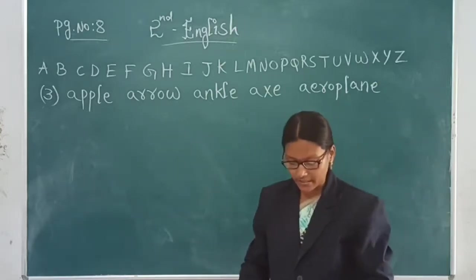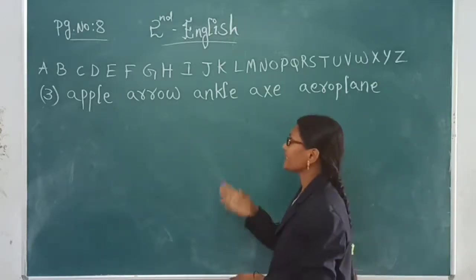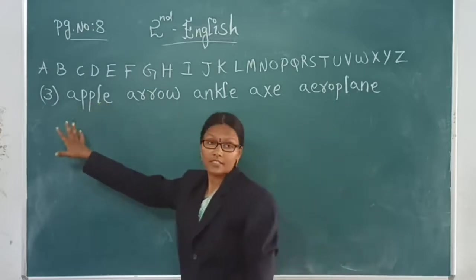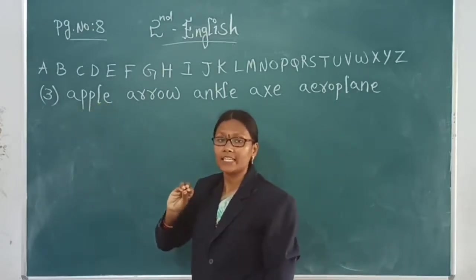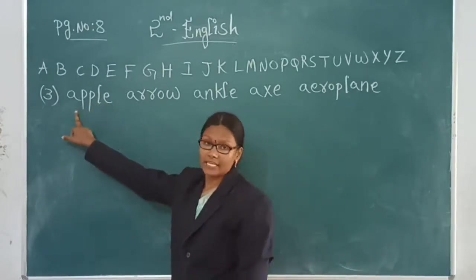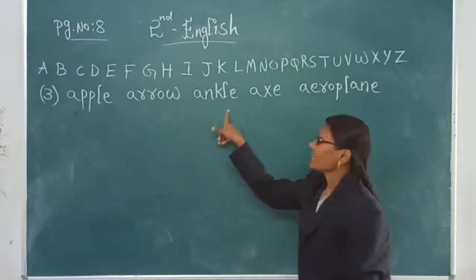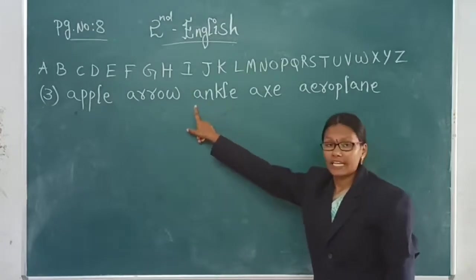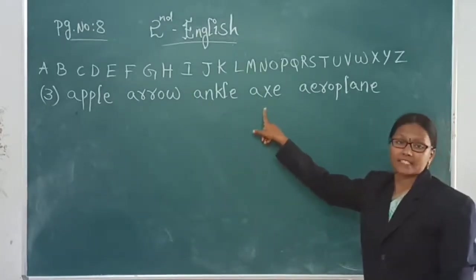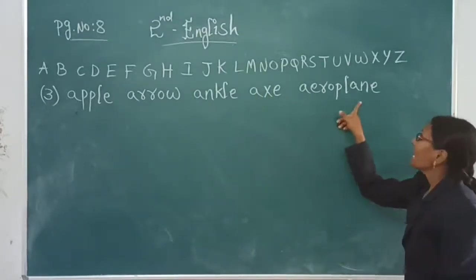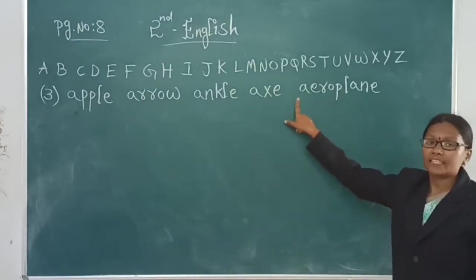These are the words we are having. If you see here, all the first words are starting with the letter A. Apple starting with the letter A. Arrow A. Ankle starting with A. Axe starting with A. Aeroplane starting with A. So all are A.